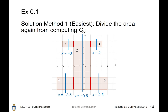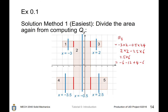For Qy, we can divide the shape into five pieces. Similarly to Qx, Qy = Σ(x̄ᵢ × Aᵢ). Region 1: x̄ = −3, A = 2; Region 2: x̄ = −0.5, A = 24; Region 3: x̄ = 2, A = 2; Region 4: x̄ = −3.5, A = 6; Region 5: x̄ = 2.5, A = 6. Summing: −6 − 12 + 4 − 21 + 15 = −6 − 12 + 4 − 6 = −24 + 4 = −20.